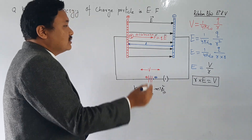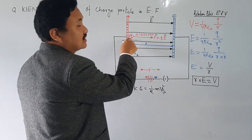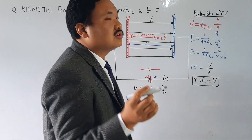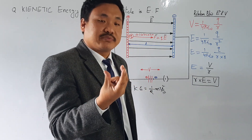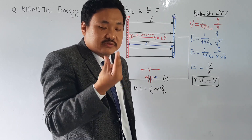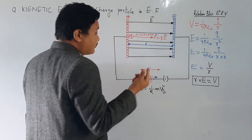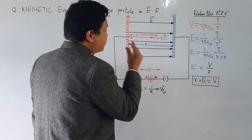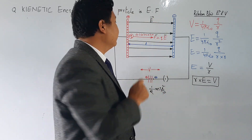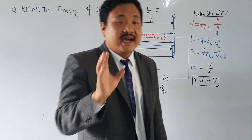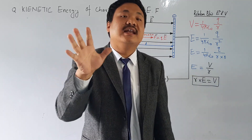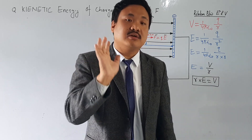All the electric field lines go from positive to negative and they are uniform. Now I will put a positive charge here. Initially it was not moving — I just kept it here. Whenever I keep it here, it will experience a force in this electric field. For a positive charge, the direction of the force is along the direction of the electric field.